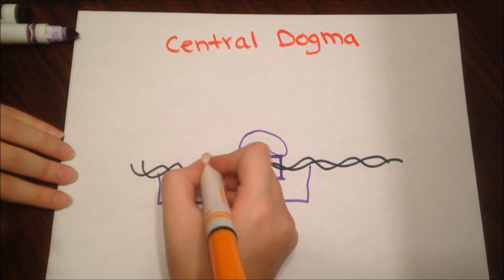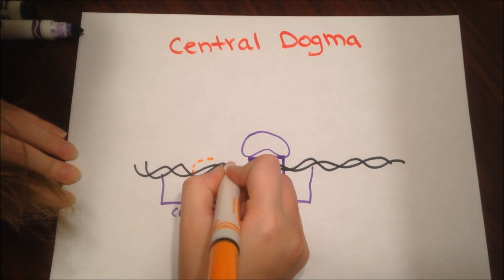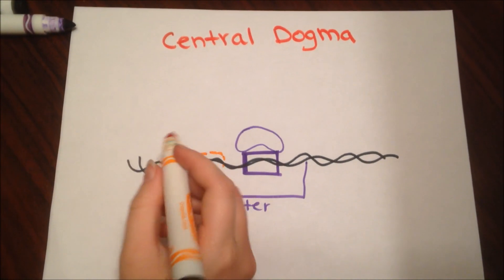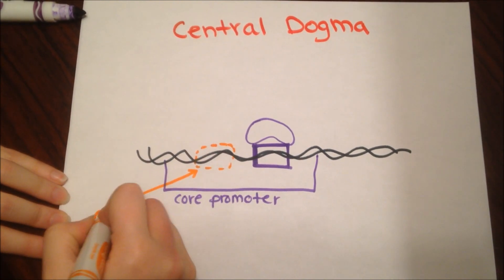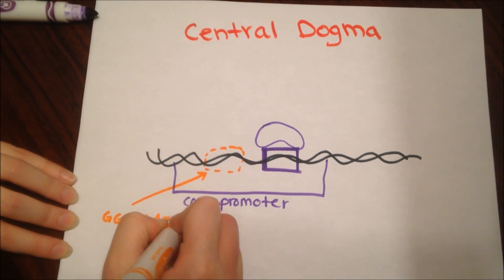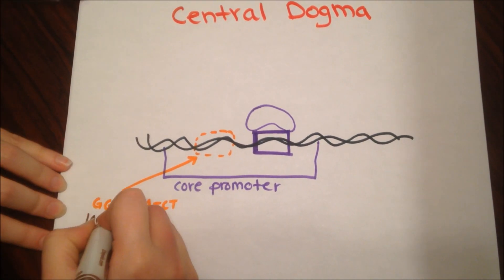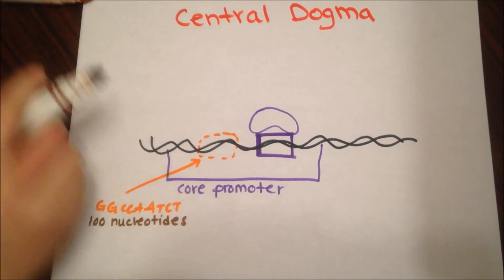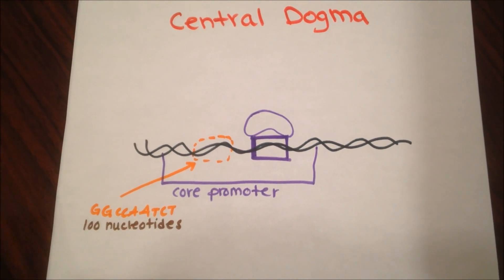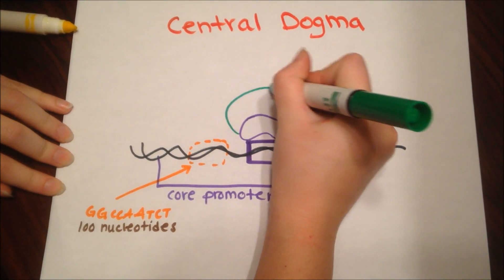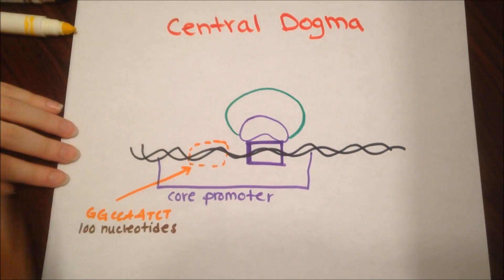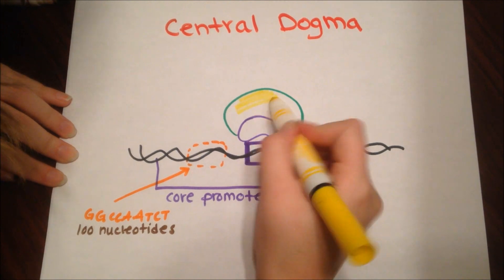In some cases, the cat box will be present, which is comprised of the DNA sequence GGCCAATCT, and about 100 nucleotides down from the Tata box. So now the Tata binding proteins come in and attach to the Tata box, bringing in TF2D, which is this complex.